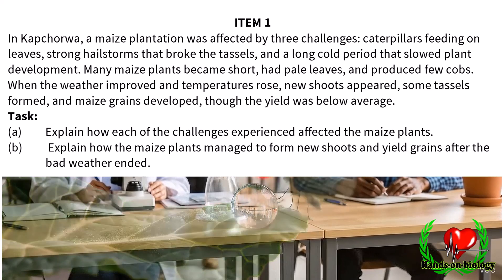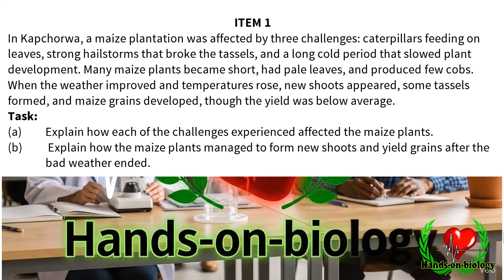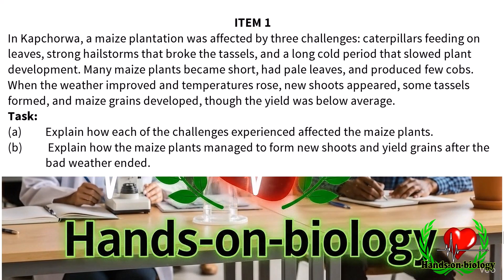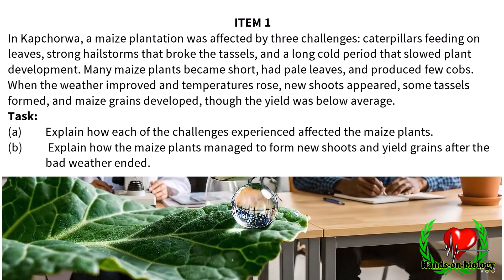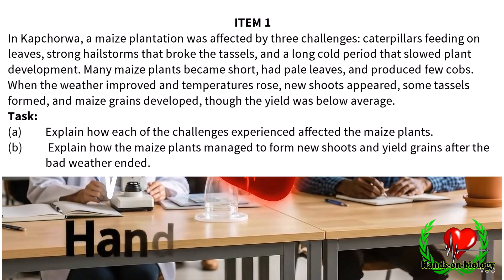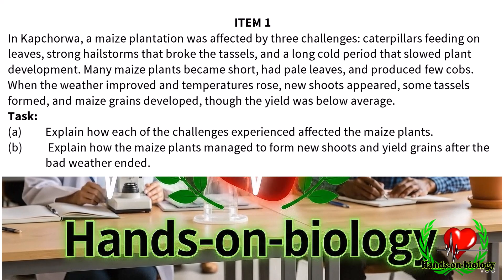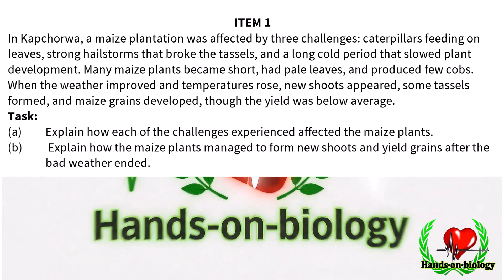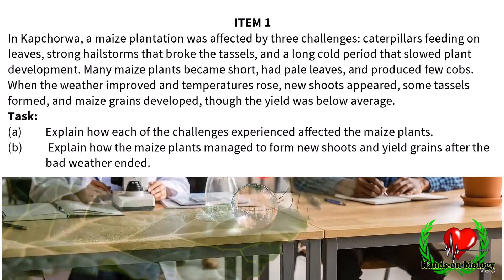Many maize plants became short, had pale leaves, and produced few cobs. When the weather improved and temperatures rose, new shoots appeared, some tassels formed, and maize grains developed, though the yield was below average.